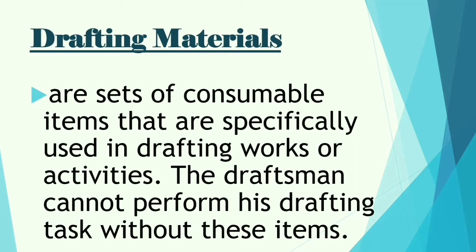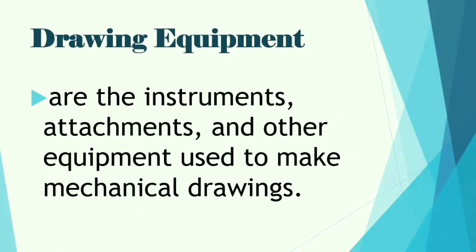So for drafting materials, these are the materials — the consumable ones — like bond paper and ink. Next is drawing equipment: the instruments, attachments and other equipment used to make mechanical drawings. For equipment, these are the instruments like computers and drawing tables.